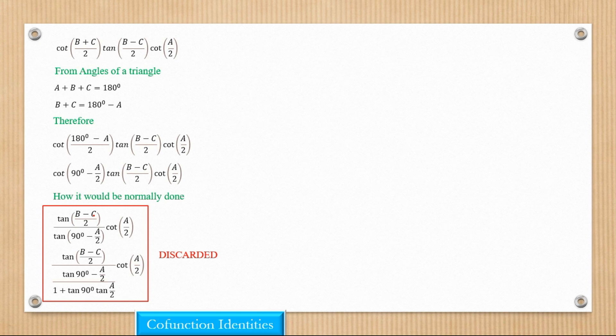So the method we're going to be using is we're going to be making use of cofunction identities formula. So cofunction identities will help us to work this out.